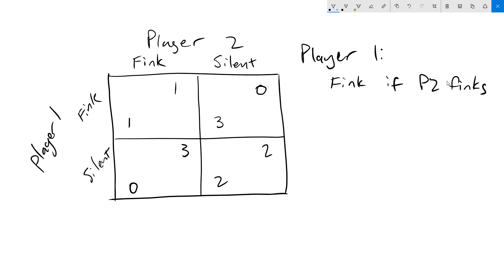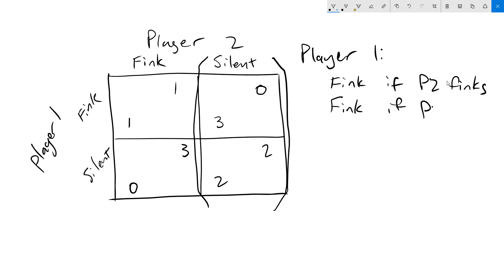Now let's look at what player one should do if player two stays silent. So we're just going to look at this right-hand silent column and see what player one should do. Now if player one thinks, they'll get three. If they stay silent, they'll get two. So think is going to be better. So player one should think if player two is silent.